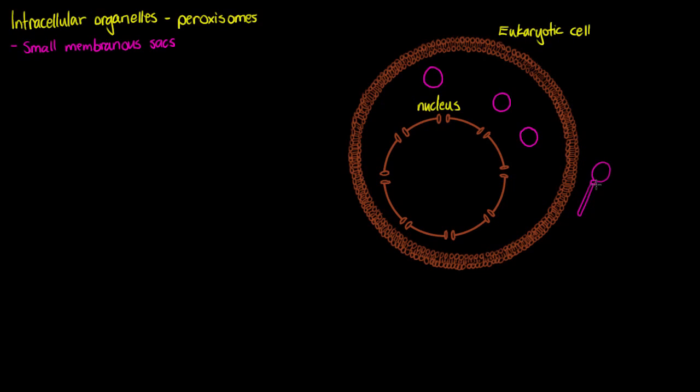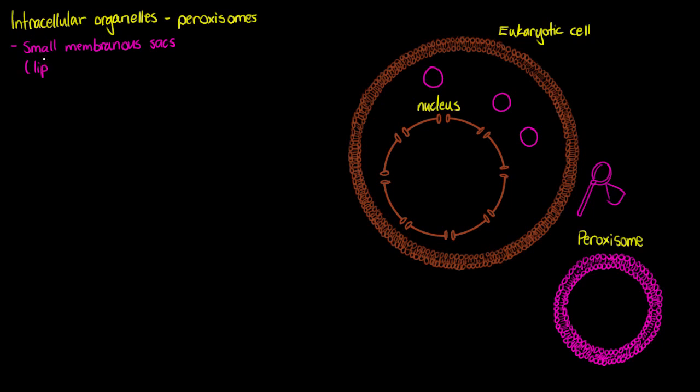So we'll just zoom in here and we're going to see straight away that compared to some of our other more complex organelles, the structure of the peroxisome is fairly simple. So we've got that lipid bilayer that we can see there.